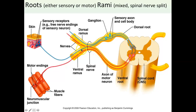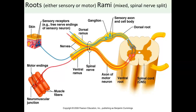Here we can see that we have mixed structures. The roots are not mixed, but the spinal nerve is mixed and the rami are mixed. So spinal nerves are mixed — that's the first point in your outline. Spinal nerves are always mixed.